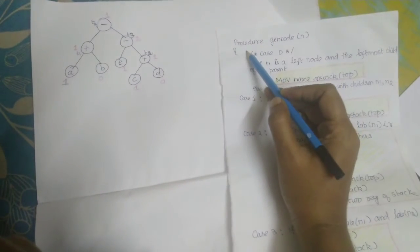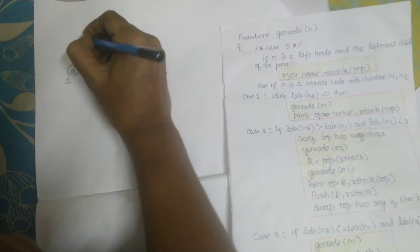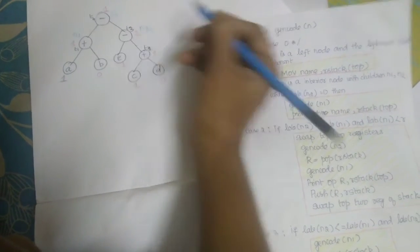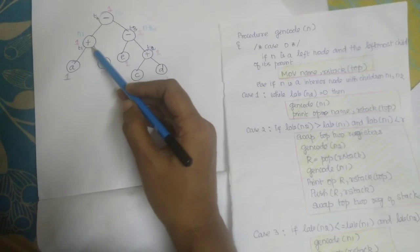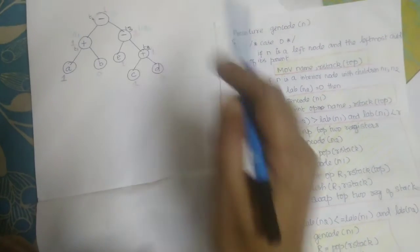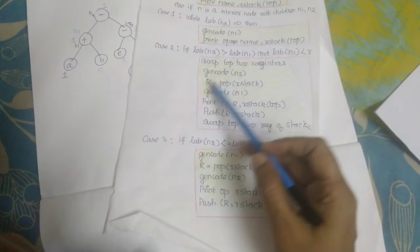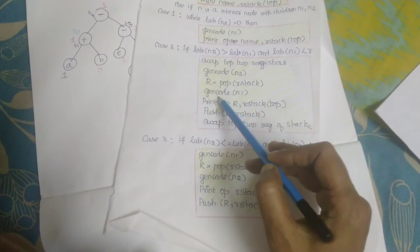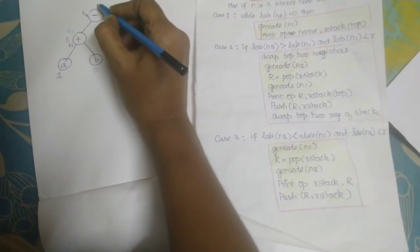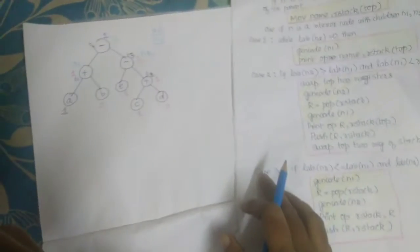The first thing is the procedure for generating code. Here n is the root, n1 is the left child, and n2 is the right child. Whenever you see gen code, it means you are generating code with respect to the root. For this case, the label of n1 is 1 and label of n2 is 2, hence it belongs to case 2. The total number of registers needed is 2, so in the stack there will be r0 and r1.